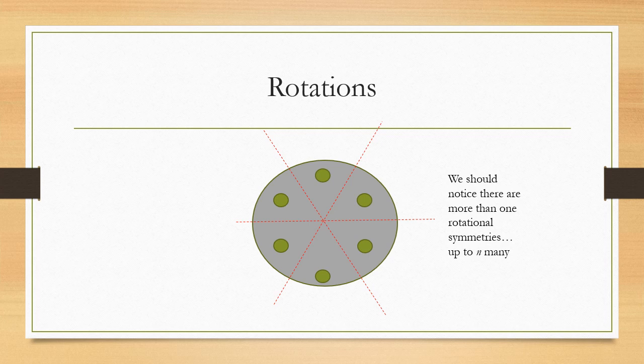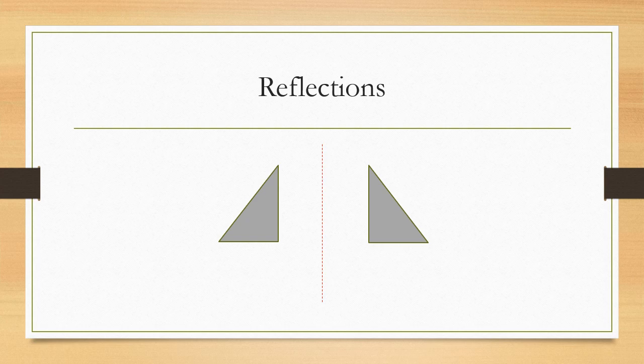We should notice that six isn't the magical rotation number — we could have rotations that have n many rotational symmetries, so just keep that in mind. Our second element will be reflections. These function very much the same as geometric reflections. We should notice that in our reflection, the pieces closest to the line, like our right angle here, will appear closest to the line as reflected in our final figure.